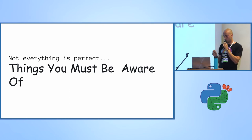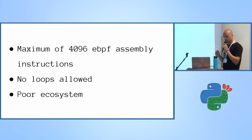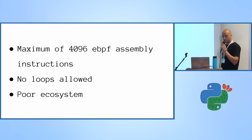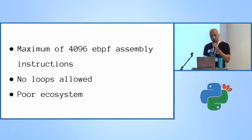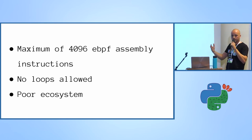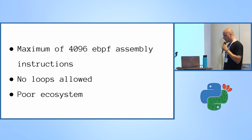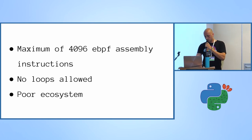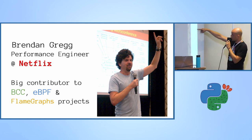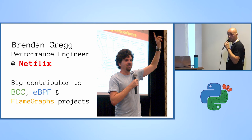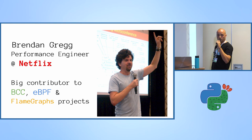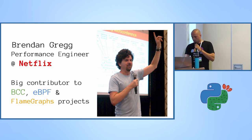Not everything is perfect — things you must be aware of when using eBPF: every program has a maximum of 4K eBPF assembly instructions, no loops are allowed, and the ecosystem is currently pretty limited because it's a fairly new technology with no IDEs, debugging tools, or orchestration/version management for these tiny programs. If you're interested in this technology, you should follow Brendan Gregg — a performance engineer at Netflix and a huge contributor to the BCC, eBPF, and flame graph projects. You should really check out his blog.